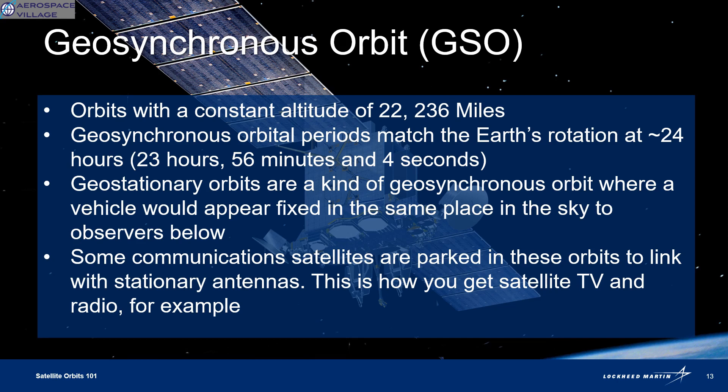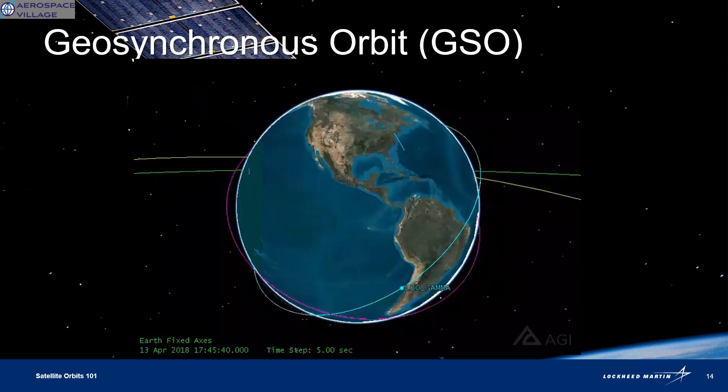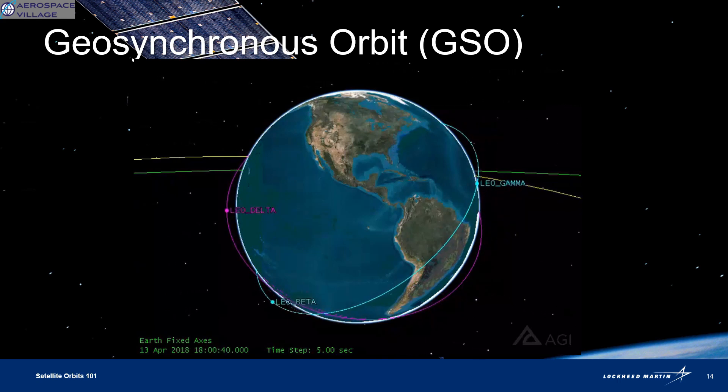Geosynchronous orbits happen at that upper threshold and match the planet's rotation in a journey around the Earth at about 24 hours. Geostationary orbits are a kind of geosynchronous orbit where it would look to us from below as if the satellite's not moving — as if it's fixed in one place. This is useful in communications between Earth antenna and satellites. It's how you get satellite TV and radio.